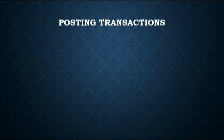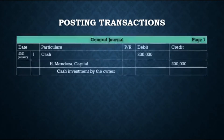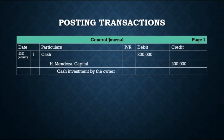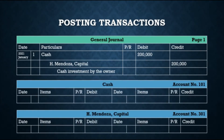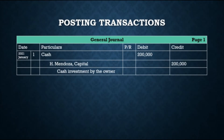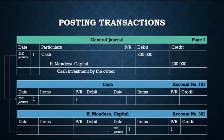To illustrate the posting process, let's use an example transaction from last episode. On January 1, cash of 200,000 was received from Attorney Mendoza, the owner, as her initial investment. We recorded this in the general journal as a debit to Cash and a credit to H. Mendoza, Capital for 200,000. To post this to the ledger, first locate the debit and credit accounts — Cash is under account number 101 and H. Mendoza, Capital under account 301. Then enter the date in the date column and the journal page number in the posting reference column — January 1, 2021 in the date column, and 1 in the posting reference column since the transaction is on page 1 of the general journal.